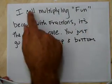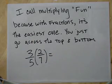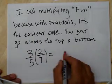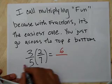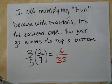Remember what I do, right? I call multiplying fun. Because with fractions, it's the easiest one. You just go across the top and the bottom, right? Three times two is six. Five times seven is 35, right? I call it multiplying fun, right?